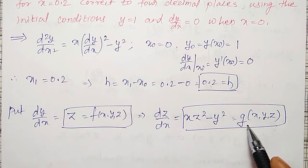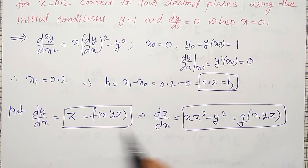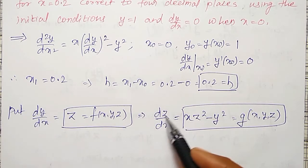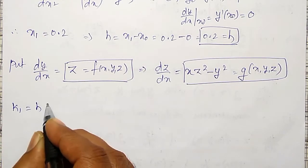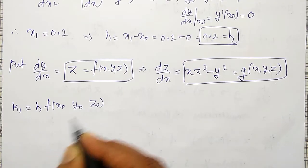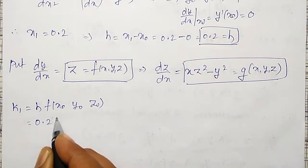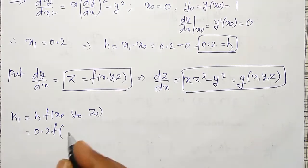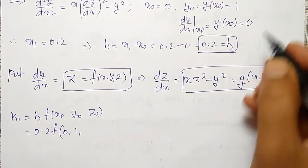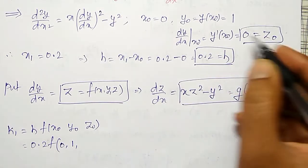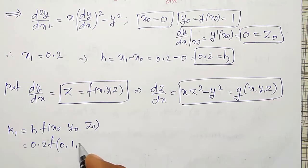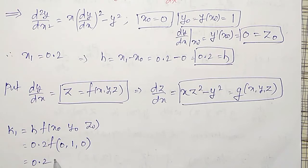Now I will calculate k1 first. k1 = h · f(x₀, y₀, z₀). h = 0.2, x₀ = 0, y₀ = 1, and z₀ = 0 (since dy/dx = z, and dy/dx at x₀ is 0). So k1 = 0.2 × f(0, 1, 0) = 0.2 × z = 0.2 × 0 = 0.